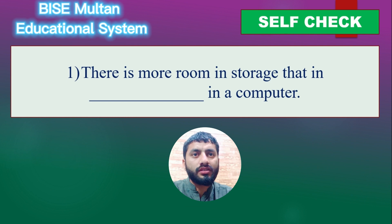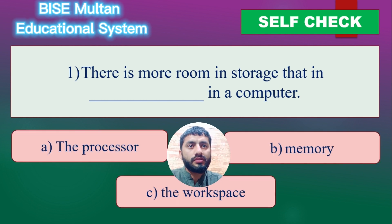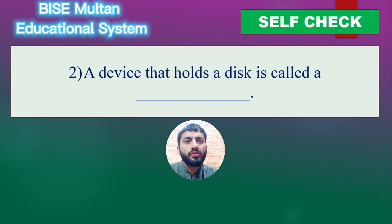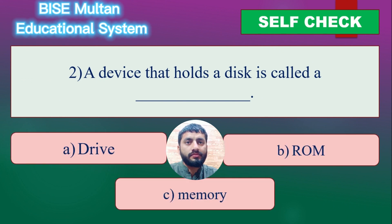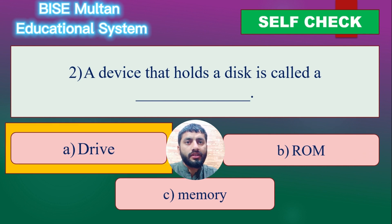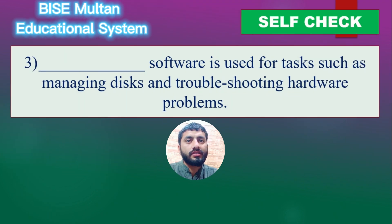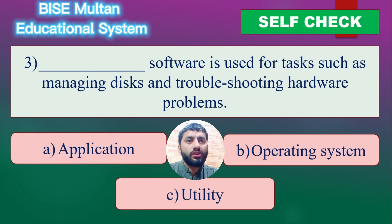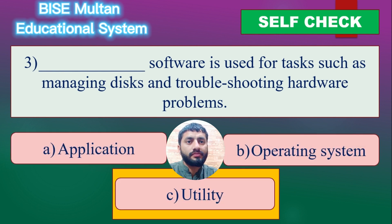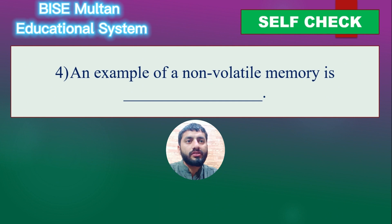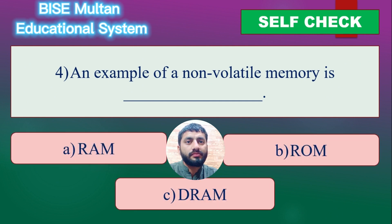Self-Check. Question 1. There is more room in storage than blank in a computer. The answer is Memory. Question 2. A device that holds a disk is called a blank. The answer is Drive. Question 3. Blank software is used for tasks such as managing disks and troubleshooting hardware problems. The answer is Utility. Question 4. An example of non-volatile memory is blank. The answer is ROM.